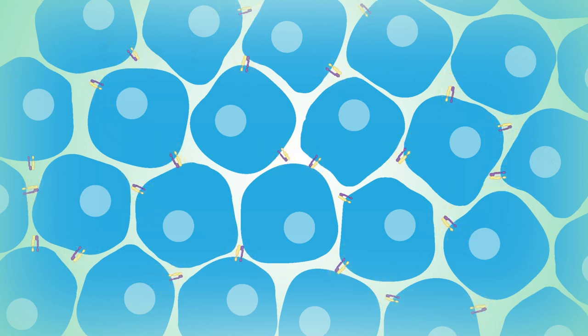But studies show that abnormally high levels of otherwise benign proteins like Integrin alpha-V beta-3 are expressed in cells affected by pathological disorders.